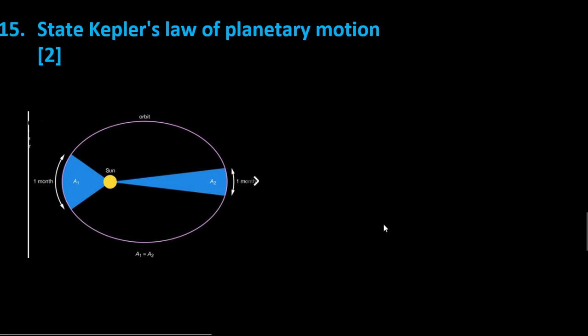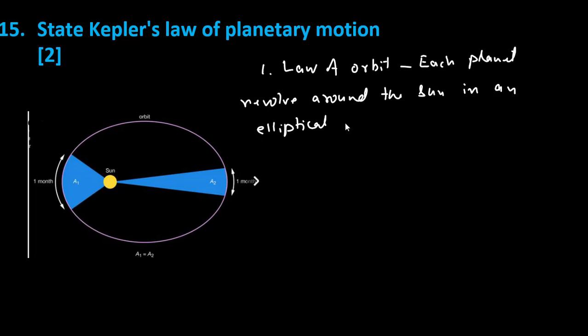Now, state Kepler's law of planetary motion. Kepler's first law of orbit: Each planet revolves around the sun in an elliptical orbit with the Sun at one of the foci.